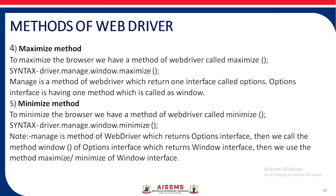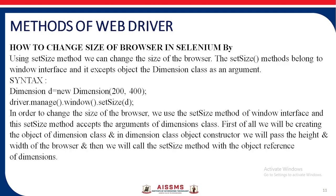To maximize the browser we use driver.manage().window().maximize(). Here, manage() is a method of WebDriver which returns an Options interface, and the Options interface has a method called window(). To minimize the browser, the syntax is driver.manage().window().minimize(). To change the size of the browser, we use the setSize method — it belongs to the Window interface and accepts an object of the Dimension class as the argument, like: Dimension d = new Dimension(...); driver.manage().window().setSize(d).